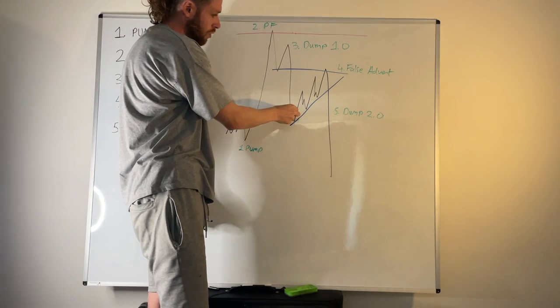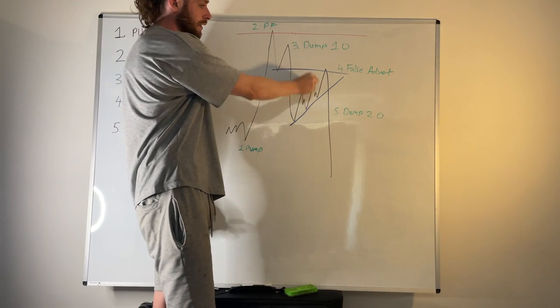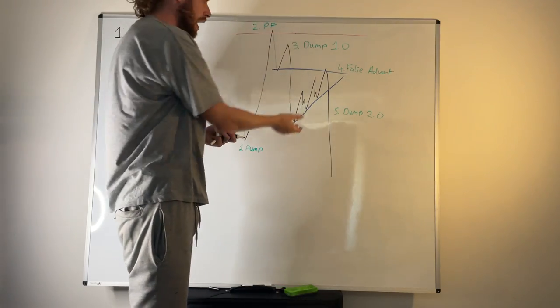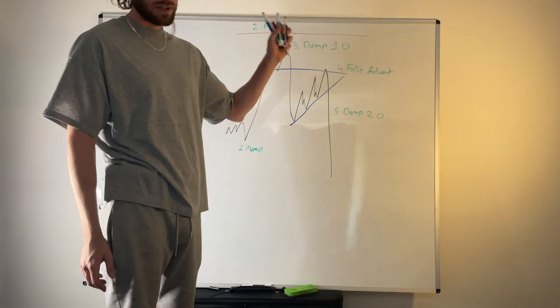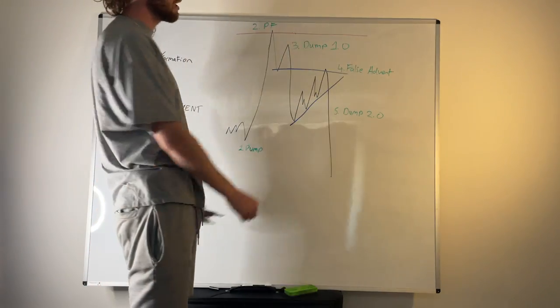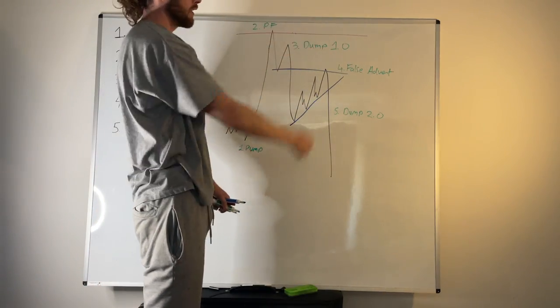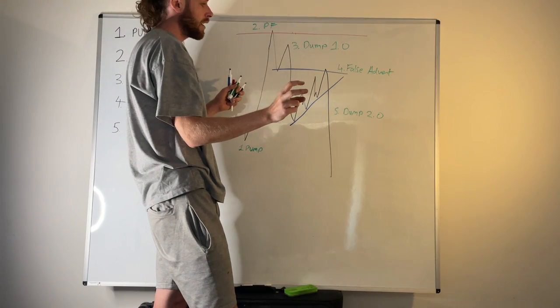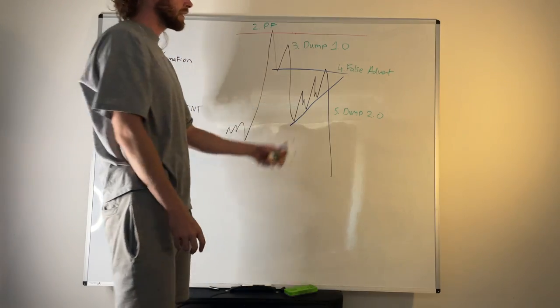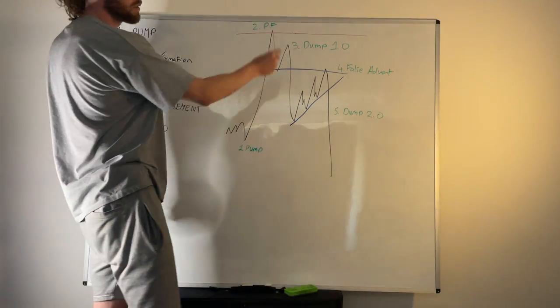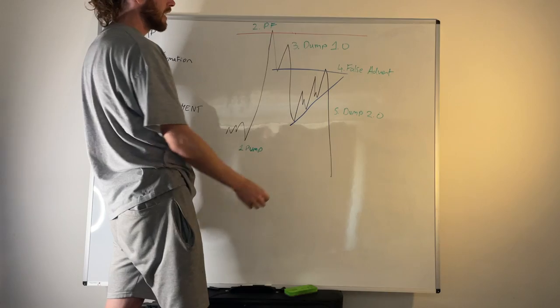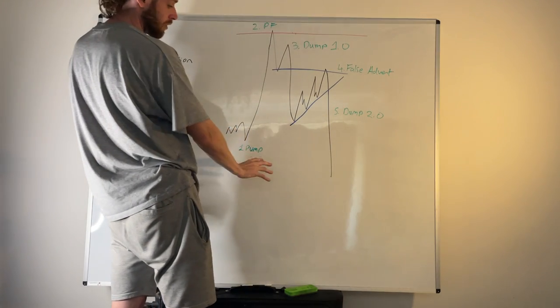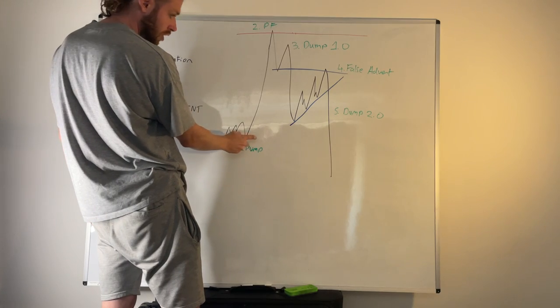If we're using a structure-based strategy, market structure hasn't broken. We invalidated this low, we're now short, then we start getting higher highs, higher lows. Structure is now switched to the upside, so everyone's buying. Or even if your structure was still to the downside, you're getting scared because this keeps making higher highs. The more this comes up, the more you're getting scared. Whereas by applying this perspective to the markets, the more this comes up, the more juicier our trade gets.